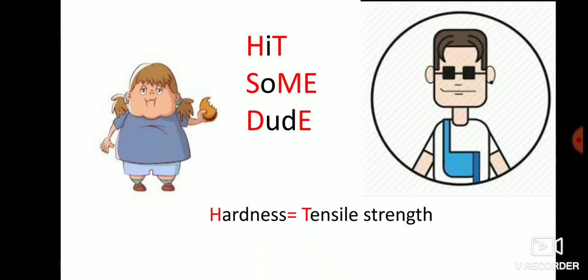Now look at the red-colored letters in the mnemonic. 'HIT' stands for: H = Hardness, T = Tensile strength. So whenever there's a question about hardness, you can say hardness is always proportional to tensile strength. I'm not explaining the concept in detail — just giving you a mnemonic, since you'll find conceptual explanations in other videos.